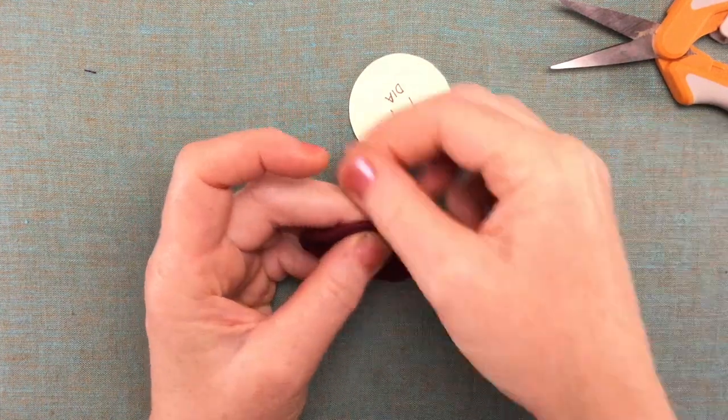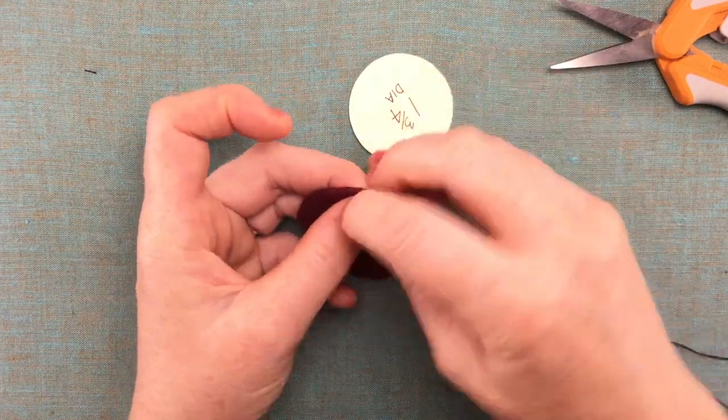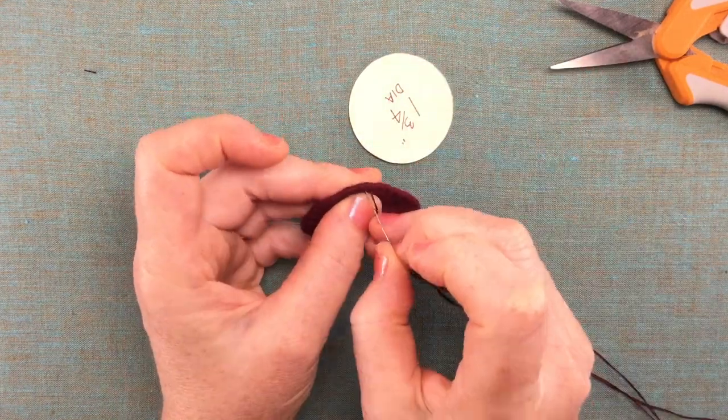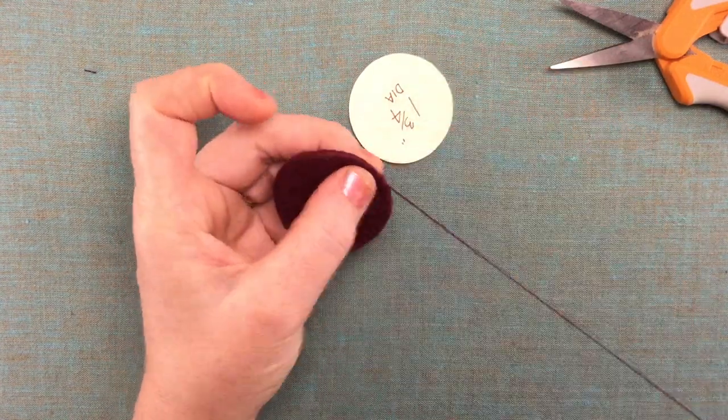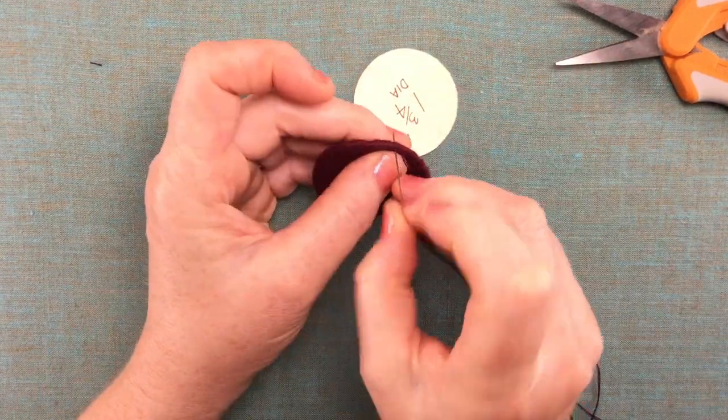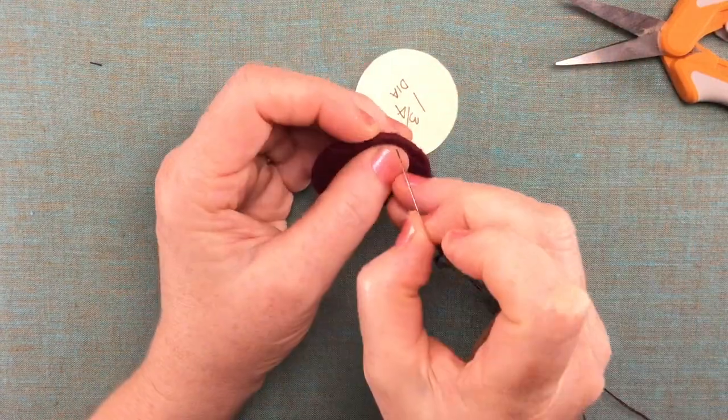So whenever I need lots of control over my stitch and my stitch size, like in a place where the stitch is going to be visible, I like to make my running stitches in two passes like this. So I go front to back and then back to front.